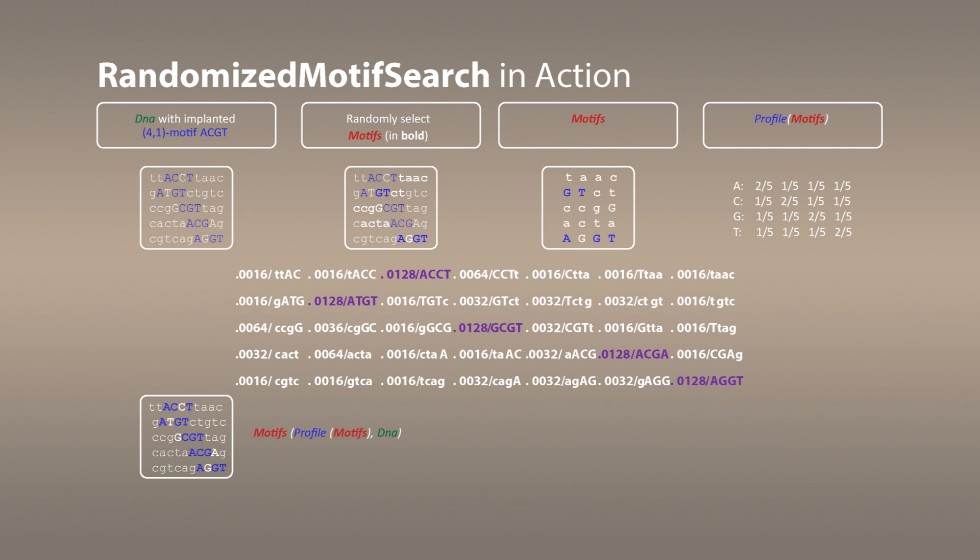But if you look carefully at this matrix, I don't have to iterate. It already found all blue inserted motifs right there. It almost sounds like a magic trick because we started from something completely random and in a single iteration found our implanted motifs. What happened?